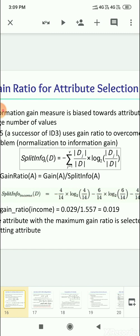Minus sigma j equals 1 to v, Dj over D times log Dj over D to the base 2. So first I will show how we can calculate the split info income of D.